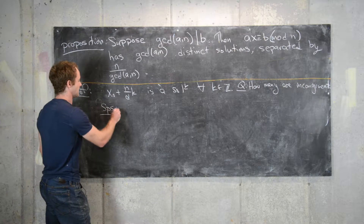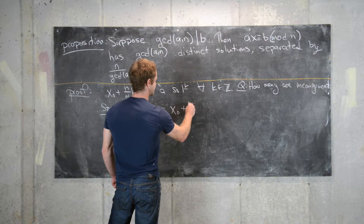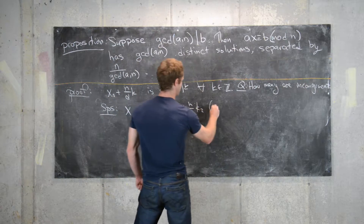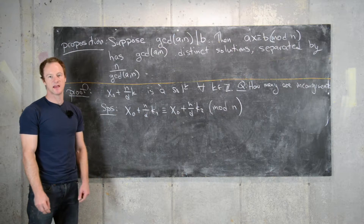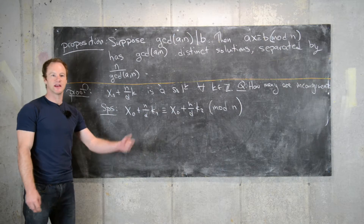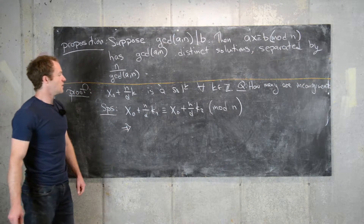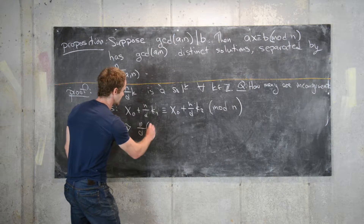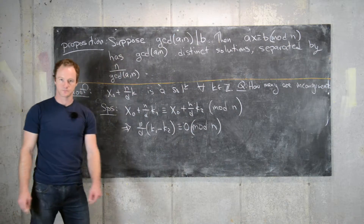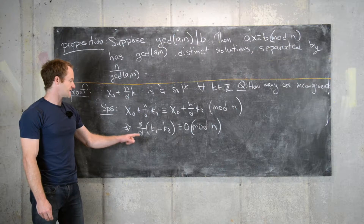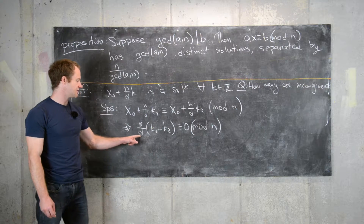Suppose that x₀ + (n/d)·k₁ ≡ x₀ + (n/d)·k₂ mod n. We want to find conditions on k₁ and k₂ so that these are congruent, and then extrapolate to find how many incongruent solutions there are. Moving things around, we get (n/d)·(k₁ − k₂) ≡ 0 mod n. That tells us that k₁ − k₂ is a multiple of d.